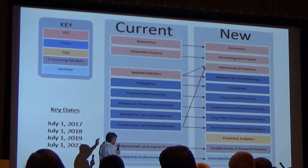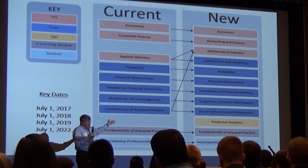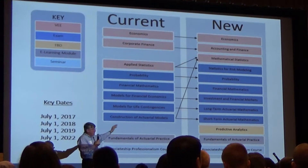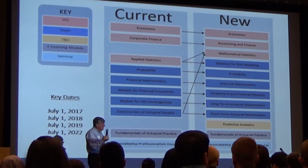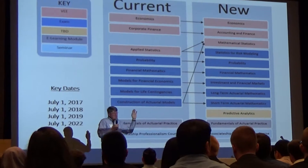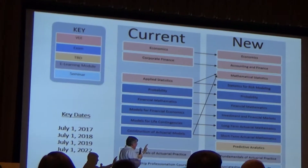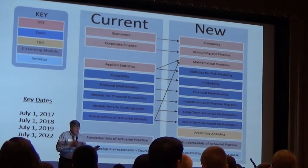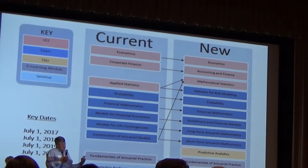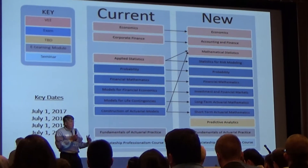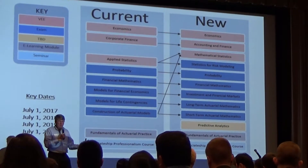Construction of actuarial models is changing the most — it changes to short-term. Right now we don't really test reserving or pricing for short-term models, so that's what's getting added. We'll have short-term models: pricing, reserving, and estimation on Short-Term Actuarial Mathematics. The LTAM exam will continue as a written-answer and multiple-choice combo. Short-Term Actuarial Mathematics will start out probably as a multiple-choice, computer-based exam. The intent is at some point to make both exams the same format — both multiple-choice or a combo approach — but it's going to take a while and there's no syllabus yet.